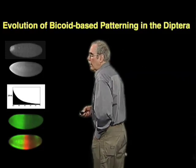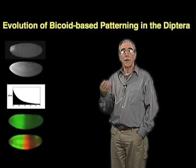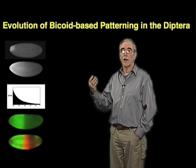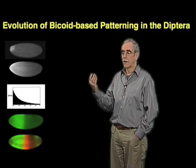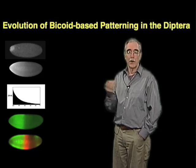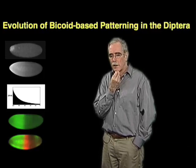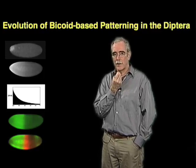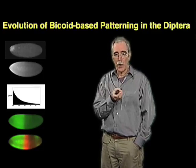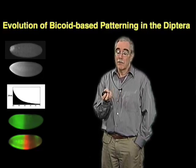In the last lecture, we talked about some of the biophysical parameters and cell biological parameters that might give rise to these constant distributions of bicoid or constant transcription patterns. One of the underlying assumptions for all of that work is that it's based on actually a fact.